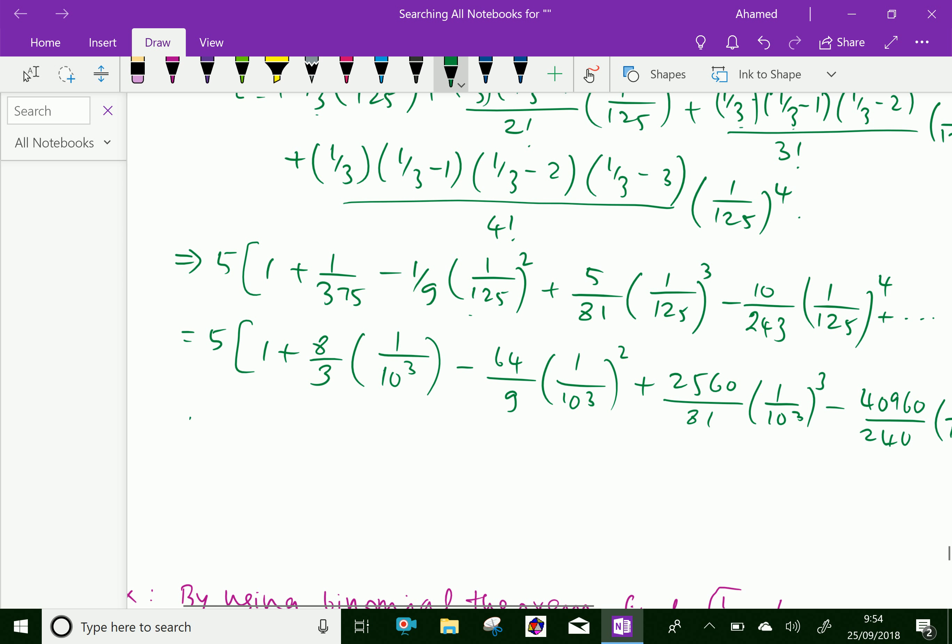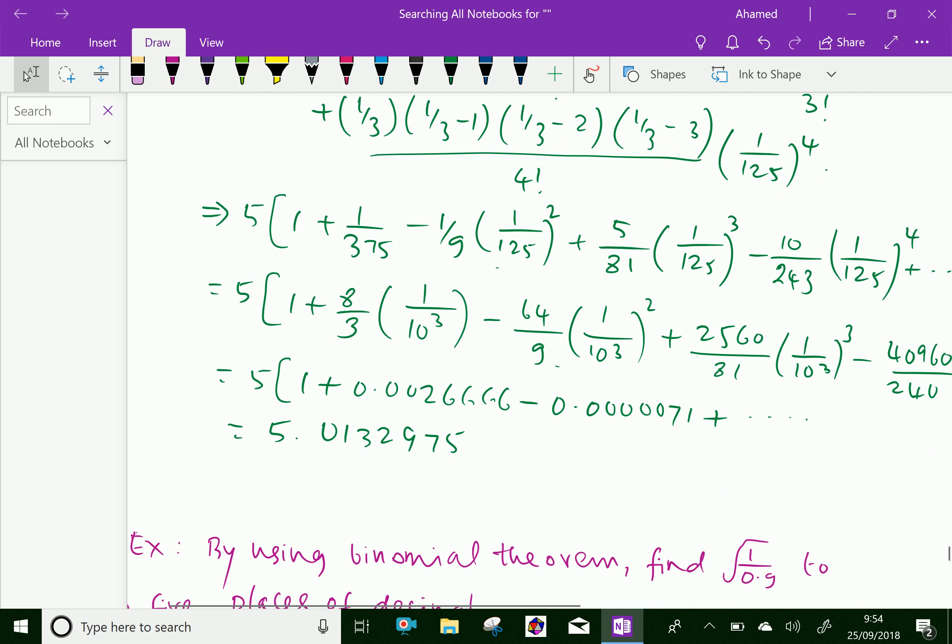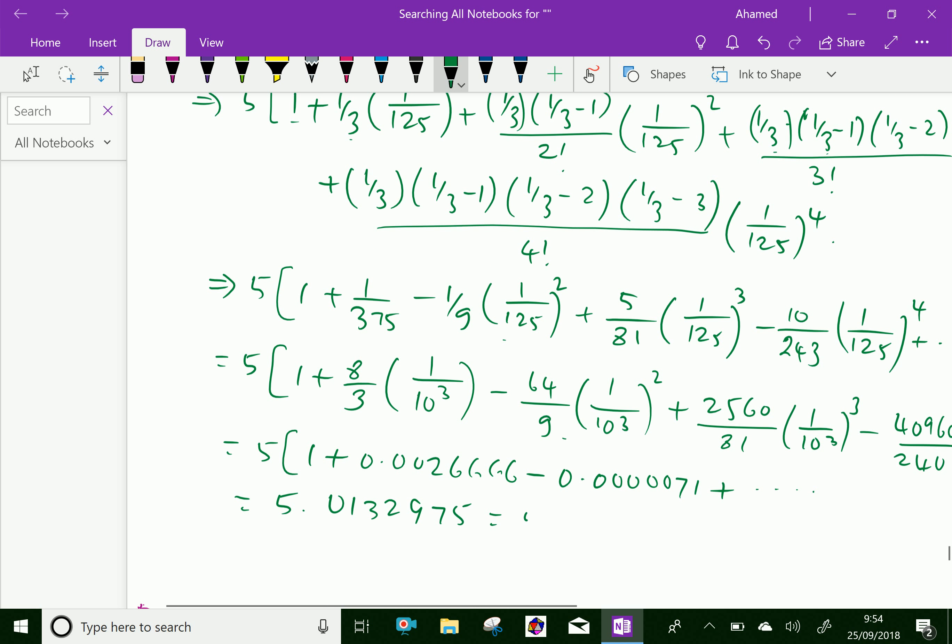For the simplification by using the calculator it gives 1 + 0.002666 minus 0.0000071 plus, it's increasing. Finally it gives the value 5.0132975.